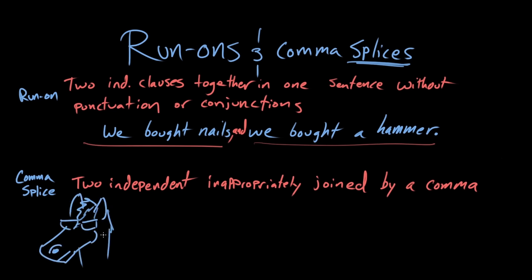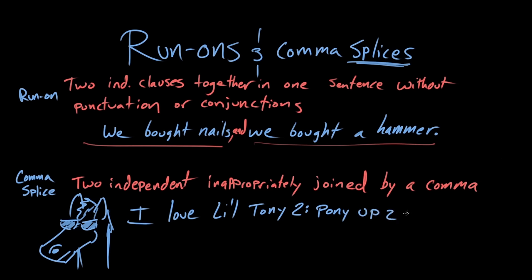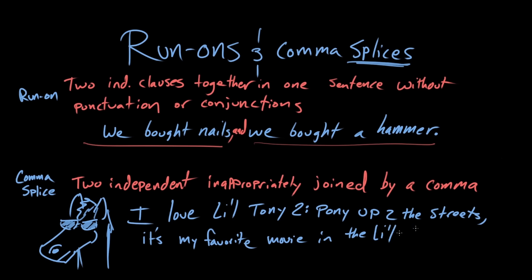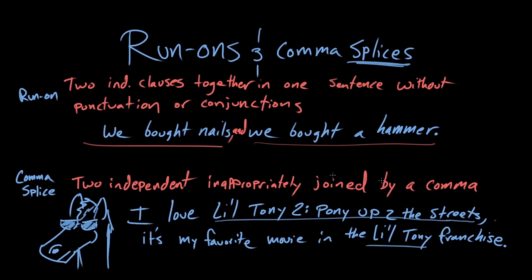So Rosie, this is Little Tony, Crime Fighting Pony. For example, in this sentence: I love Little Tony 2, Pony Up to the Streets, it's my favorite movie in the Little Tony franchise. It's a very fine series of non-existent films. The problem with this sentence is that it has a comma in the middle that inappropriately joins two independent clauses.